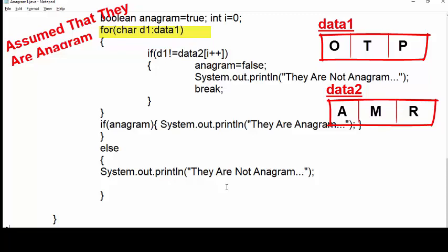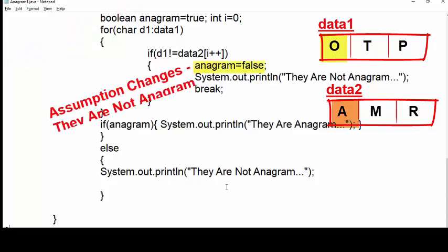Here each character of data1 is stored in d1. For data2, we use i which is initialized to 0. Within the loop, we compare d1 with data2 at ith position, and after comparison, increment the value of i. Here we have used post increment operator. Please note that the incrementation of i here does not depend on the condition result, that is whether it is true or false. If these characters are not equal, then we change the assumption of anagram and change the value to false. When anagram is false, then we do not need any further comparison, so we break the statement to end the loop.